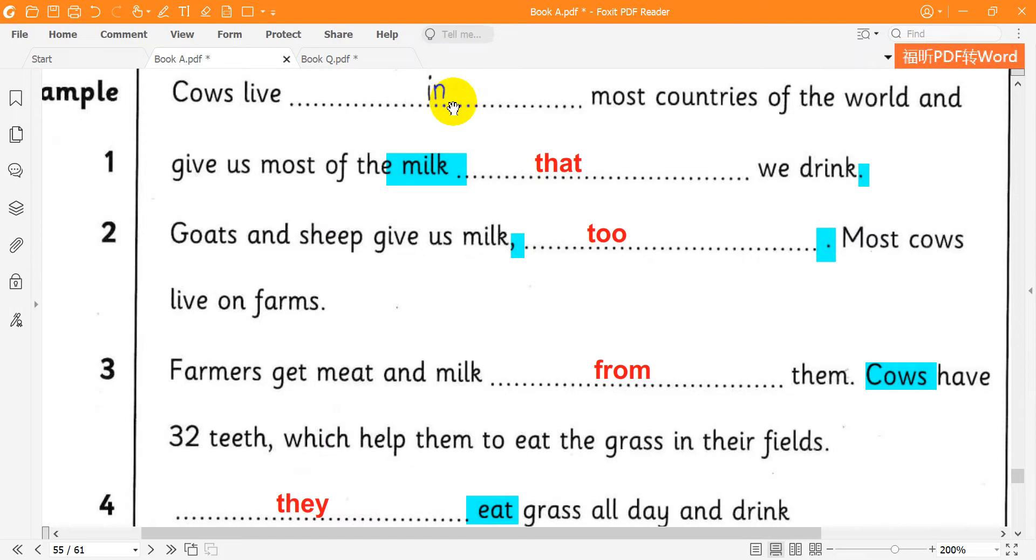Cows live in most countries of the world and give us most of the milk that we drink. Goats and sheep give us milk too. Most cows live on farms.